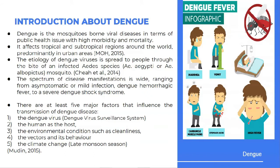I'm going to talk about dengue introduction. Dengue is a mosquito-borne viral disease in terms of public health issue with high morbidity and high mortality. It affects tropical and subtropical regions all around the world, especially in urban areas. The etiology: dengue virus is spread to people through the bite of the infected Aedes species, which is a mosquito. This Aedes species actually has two different types: Aedes aegypti or Aedes albopictus. The spectrum of disease manifestation ranges from asymptomatic, mild infection, dengue hemorrhagic fever to dengue shock syndrome.